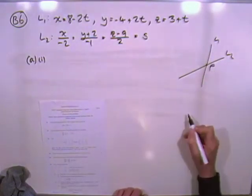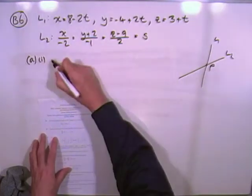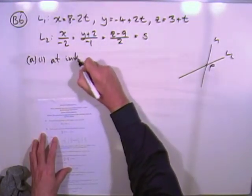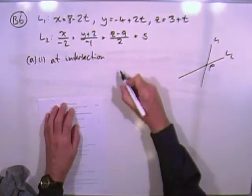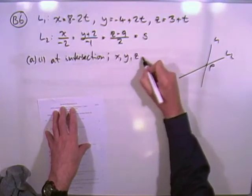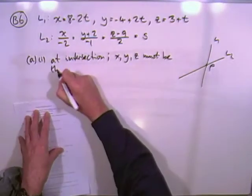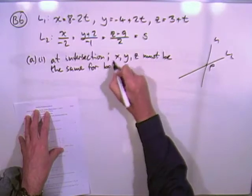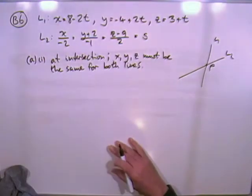So there's two lines that may well cross in space if they do, we'll call it the point P. And the thing is, if they do in fact cross, then at that point of intersection, all the coordinates of the points, x, y, and z, must be the same on both lines.